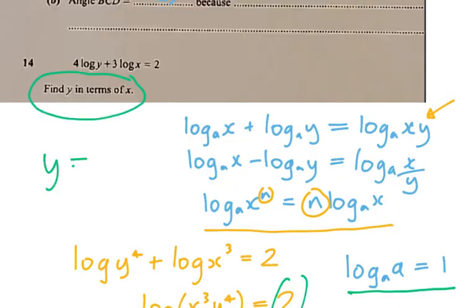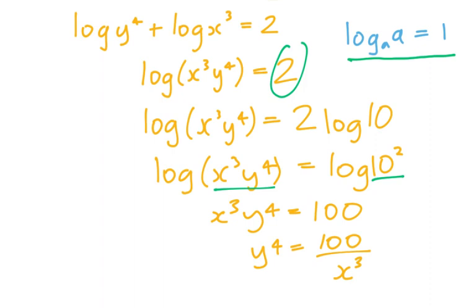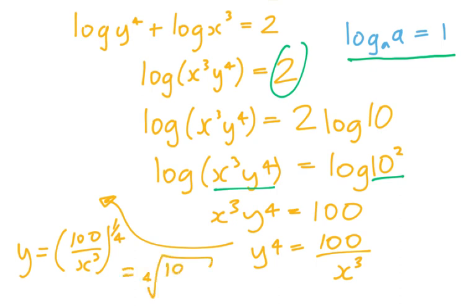It's actually asking us to find y in terms of x, so we've got to write y equals something x. So y is going to be the subject. I divide by x³, and then to the power of 4 to remove that, it's the power of a quarter or quartic root, doesn't matter which way you write that. So either of those should work.